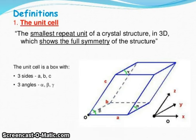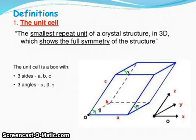Definitions of unit cells. The smallest repeat unit of a crystal structure in 3D which shows the full symmetry of the structure. The unit cell is a box with three sides ABC and three angles alpha, beta, and gamma. Typical crystal structures: 3D, 14 Bravais lattices and seven crystal systems.